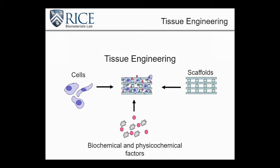Overall, tissue engineering in the laboratory allows us to focus on three main areas. The first, of course, is cells — the workhorses of our tissues and the living component that turns these projects into something actually living. We'll also talk about incorporating biochemical and physicochemical factors, including everything from growth factors to the shear stresses and forces a cell might experience once implanted in our scaffolds. We'll also talk about the scaffolds themselves — the biomaterials that we might use to guide cell fate in the directions we discussed.